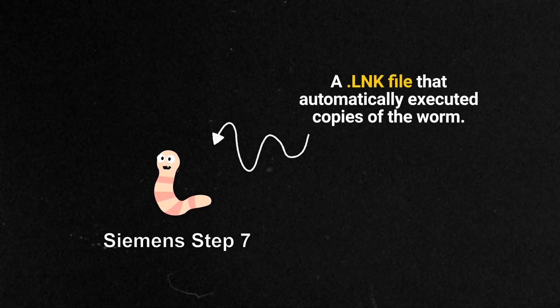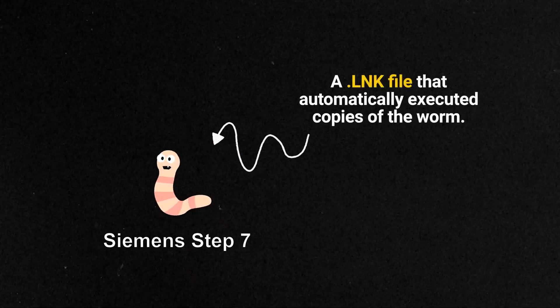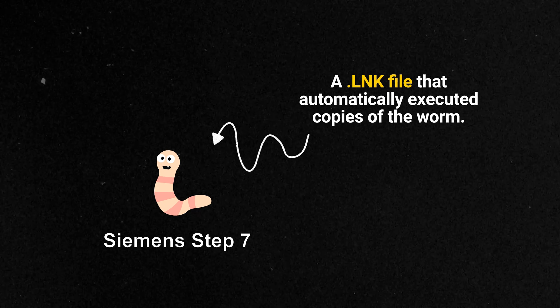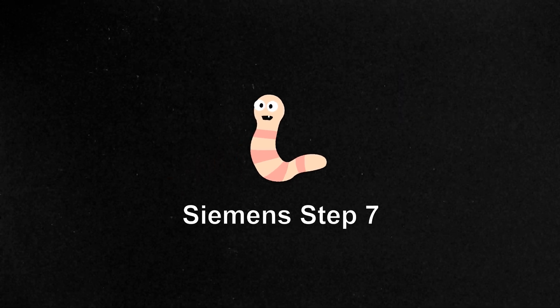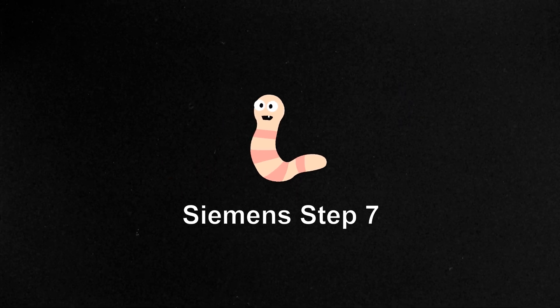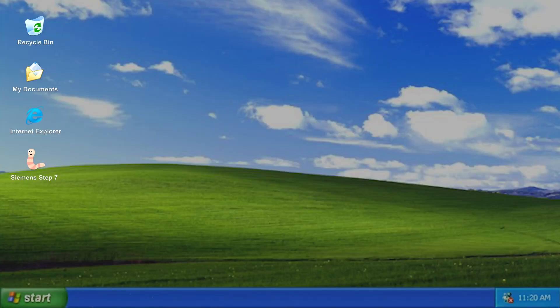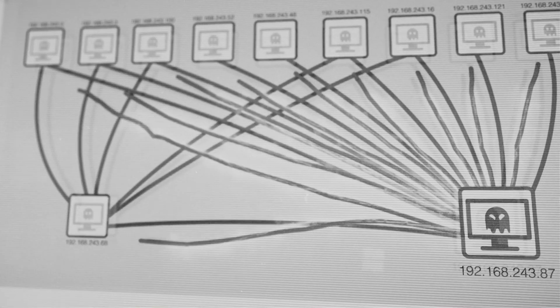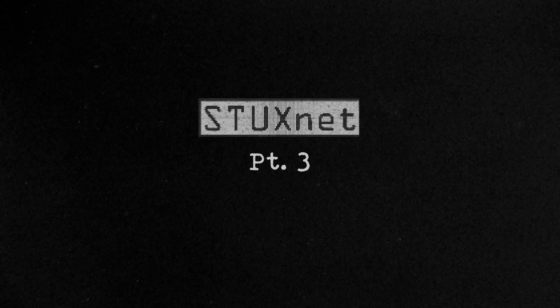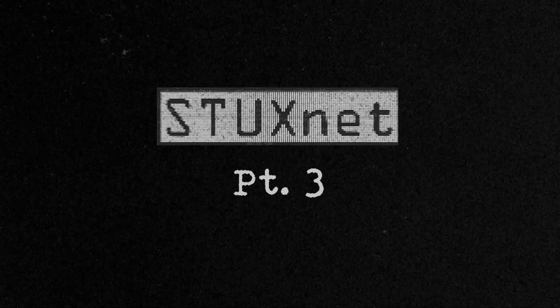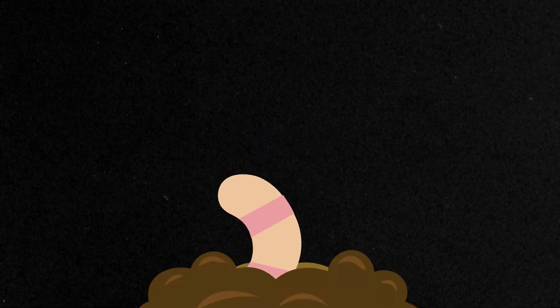The second part of Stuxnet was a link file that automatically executed copies of the worm. In this case, there was no need for user interaction. If the user just viewed the icon in Internet Explorer, it would automatically execute the file.